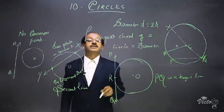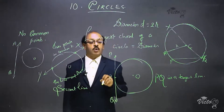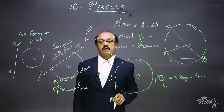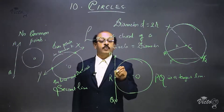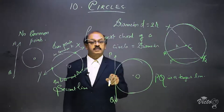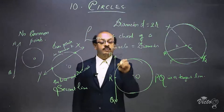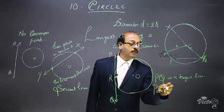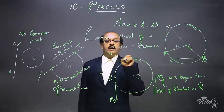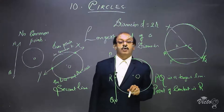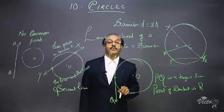So what is a tangent to a circle? The definition is: if a line and a circle have only one point in common, that line is called a tangent line to the circle. The common point R is called the point of contact or point of tangency — both terms are correct. So if a line and a circle have only one point in common, that line is a tangent and the common point is the point of contact or point of tangency.